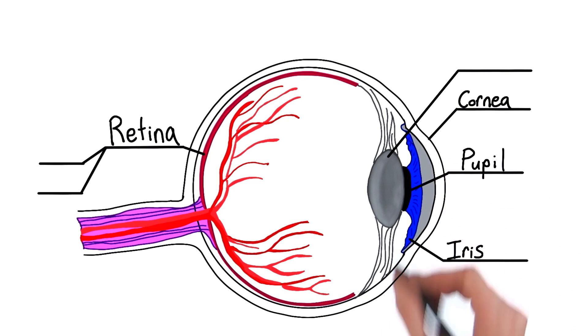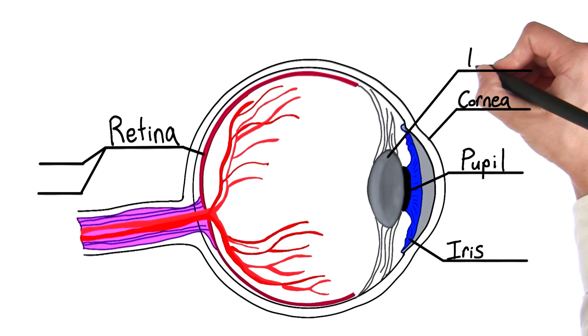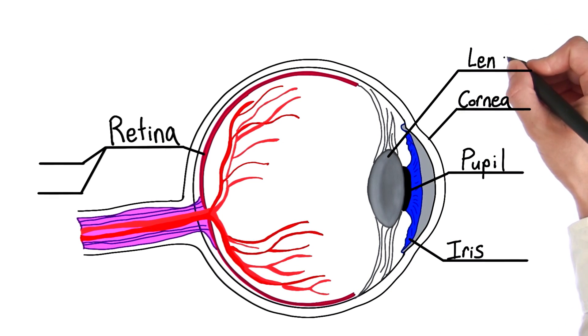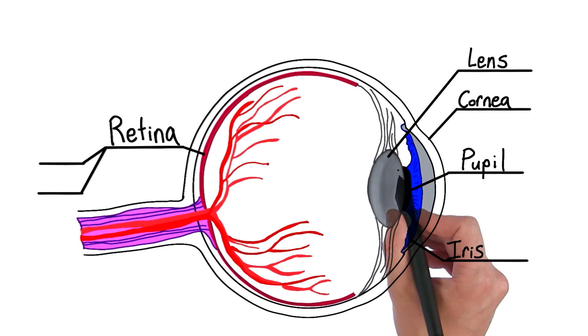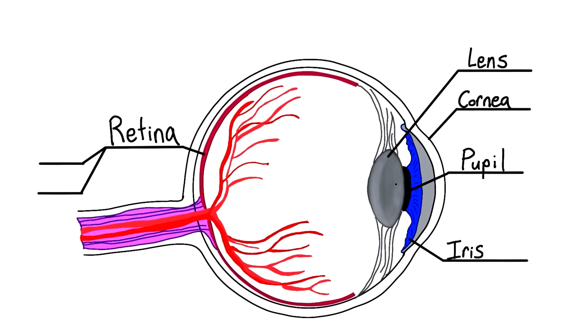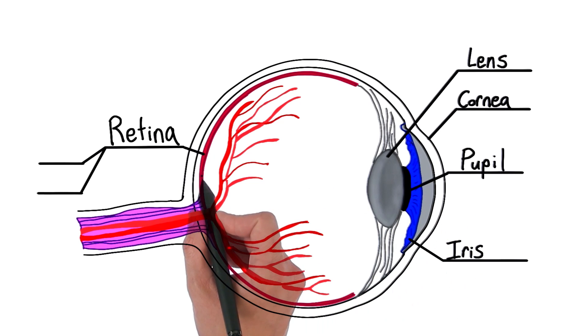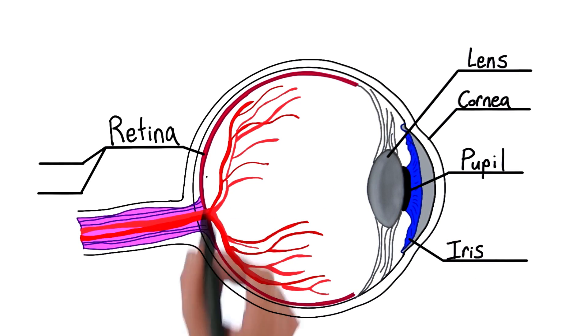And then what about this guy right here? Right. That's the lens. Remember how before we were talking about how the light gets bent when it enters the eye? Well, the lens is what does that bending, that focusing, to make sure that the light enters and is focused onto the back of the retina.